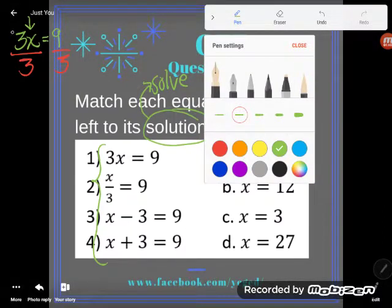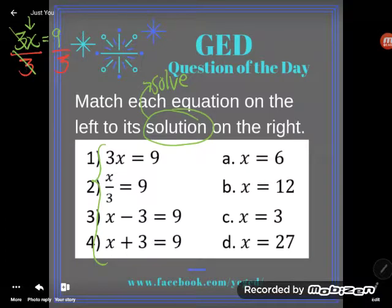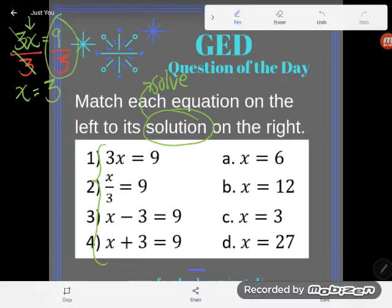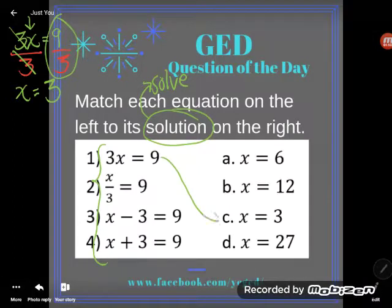What will our new equation be? On this side, multiplying and dividing by three cancel so that x is alone. On this side is the math to do. Nine divided by three is three. So the solution to that first equation is x equals three. One matches with c.